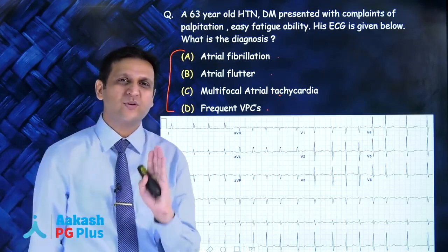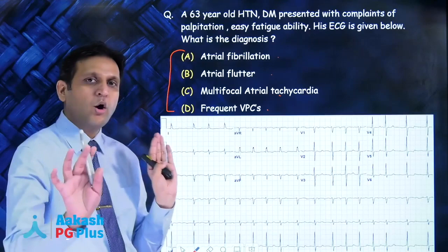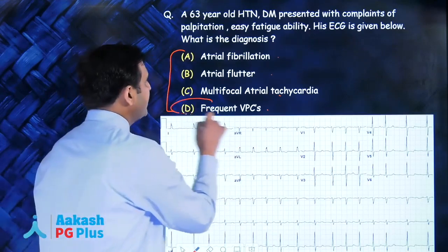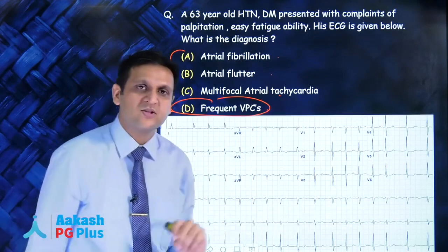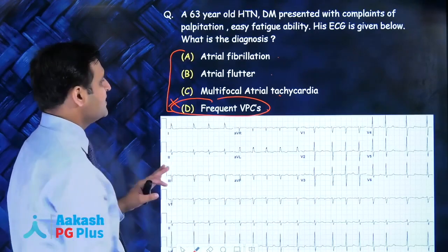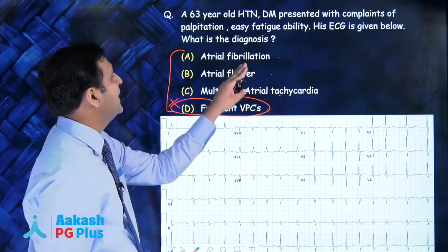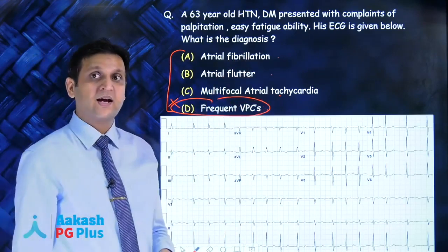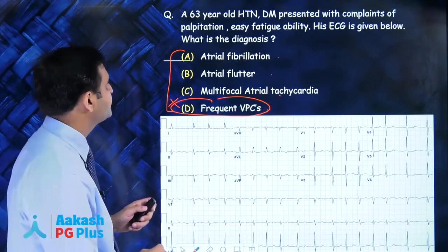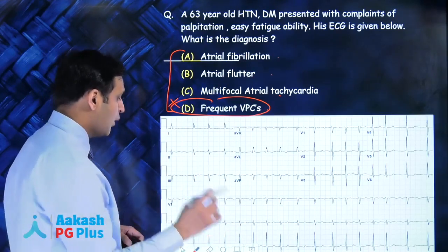I'm going to tell you a very easy way to differentiate between the three. All of you can make out that frequent VPCs is not there in the ECG, so that is not an option. We just have to differentiate between fibrillation, flutter, and multifocal atrial tachycardia, also known as MAT. The answer to this question is atrial fibrillation. Why?